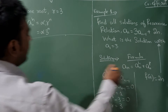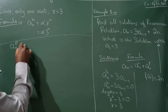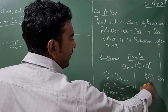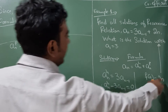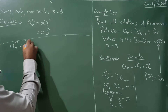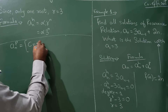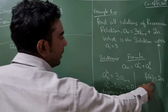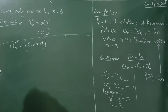Now we need to find the particular solution aₙᵖ. Since f(n) = 2n, we use the formula for particular solution: assume aₙᵖ = cn + d.